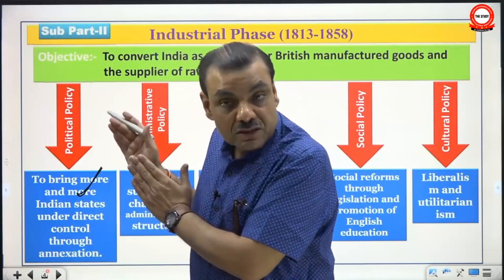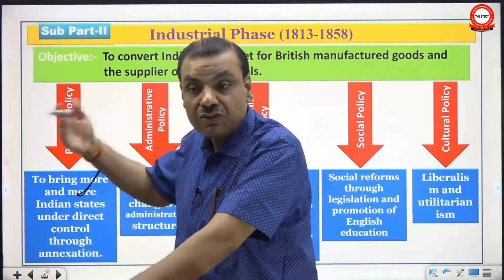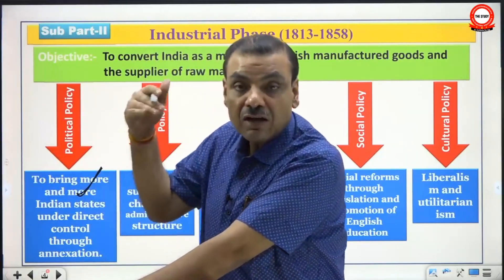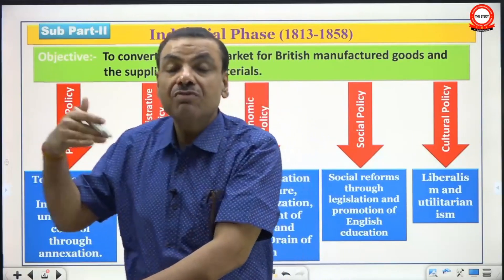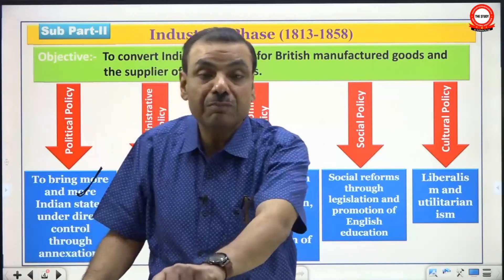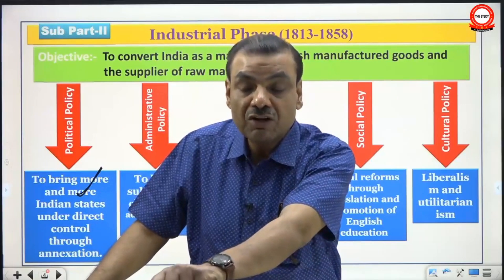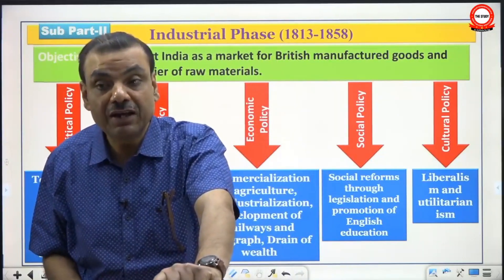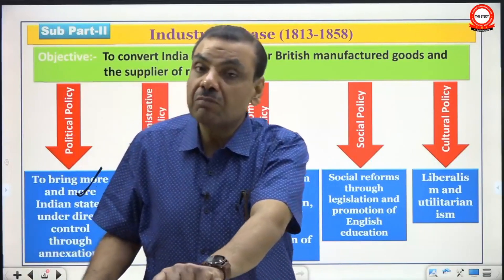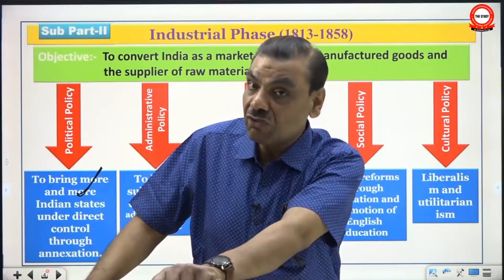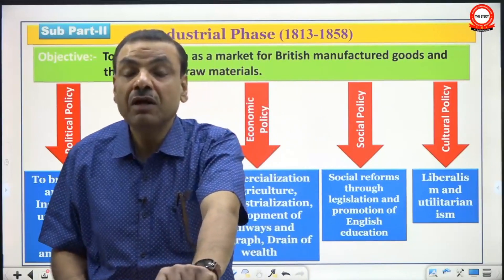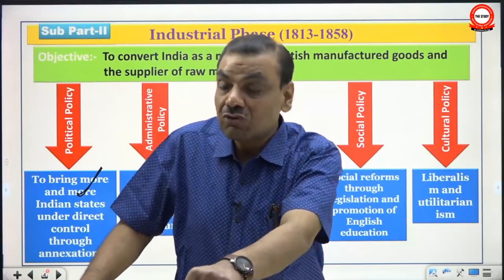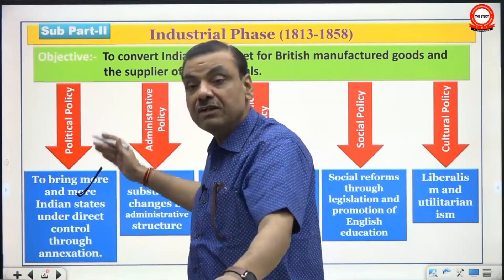This is called the industrial phase of colonialism because it was the time when there was a rise of industrial capitalism in Britain. As a colony, India was supposed to be subservient to the basic interests of the metropolitan state. In order to fulfill the needs of British industrial capitalism, there was a major policy shift towards India, and India had to be enabled for promoting the industrial capitalist interests of London.